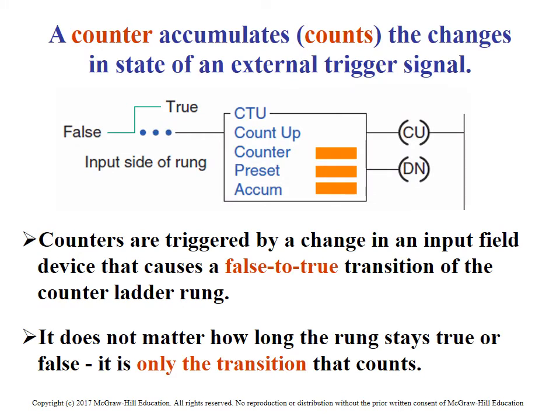As you remember in the previous segment, there are three components to the counters: there's the address, the preset value, and the cumulative value. It consumes three words — the control word, which has bits associated to it such as counter up, counter down, done bit, and all those. And then the preset word and accumulated word.